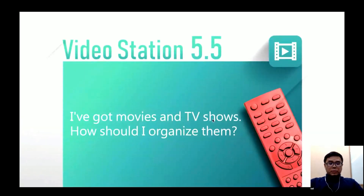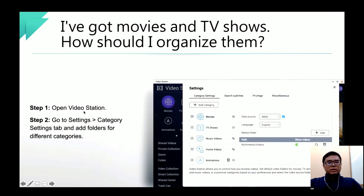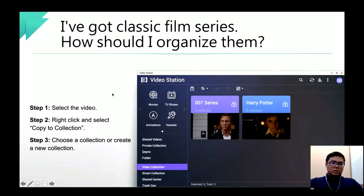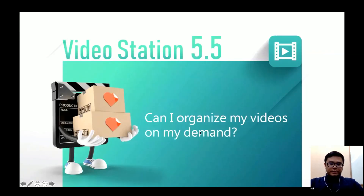If you have movies or TV shows, how can you organize them with Video Station? First, go to Video Station and open Settings. There is a Category tab where you can set the folder for each category. If you have classic film series you really like — like Star Wars — you can also organize them. Just select the videos, right-click, and choose the 'Copy to Collection' option to select an existing collection or create a new one.